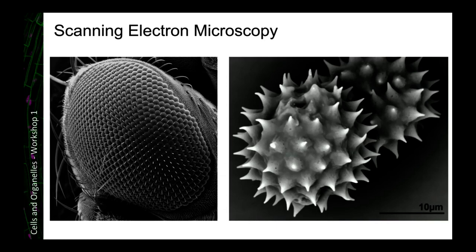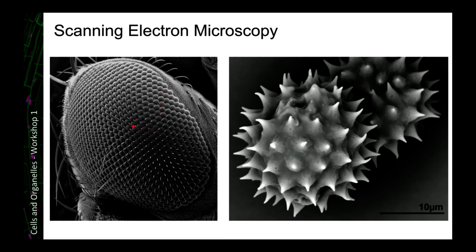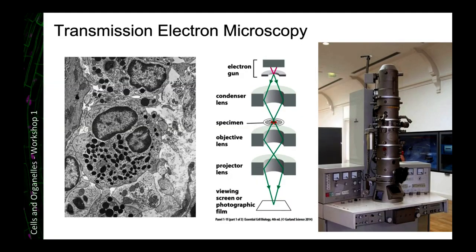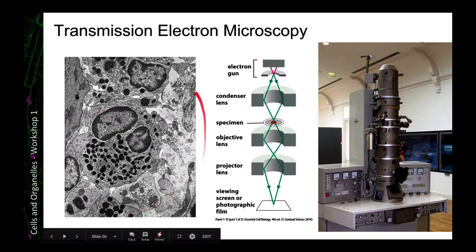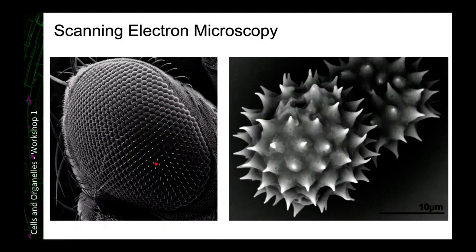We can also use scanning electron microscopy. So that gives us this is the same basic principle. But rather than going through your sample, it bounces off. So you get these amazing three dimensional images. So on the left hand side, this is the eye of a compound eye of a drosophila fly. So you can see these individual light focusing cells and then these little hairs in between. On the right hand side, we've got some pollen grains from daisy plants. But electron microscope images are always in black and white.